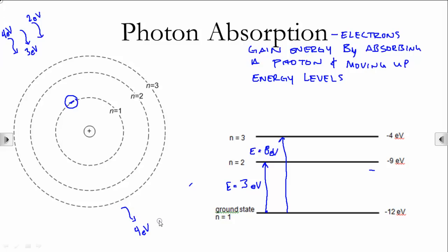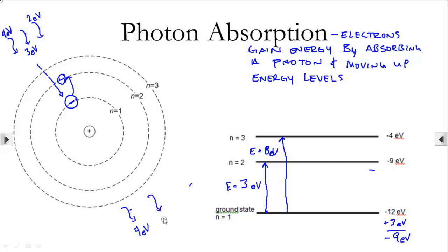The 3 electron volt photon: negative 12 plus 3 gives negative 9 electron volts, which is an energy level. So that photon has the ability to be absorbed by the electron, kicking it up into the n equals 2 level — it's absorbed and doesn't come out. The 2 electron volt photon: negative 12 plus 2 is negative 10 electron volts, which is not an exact energy level, so that passes through as well.